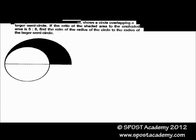The figure below, not drawn to scale, shows a circle overlapping a larger semicircle. If the ratio of the shaded area to the unshaded area is 5 to 8, find the ratio of the radius of the circle to the radius of the larger semicircle.